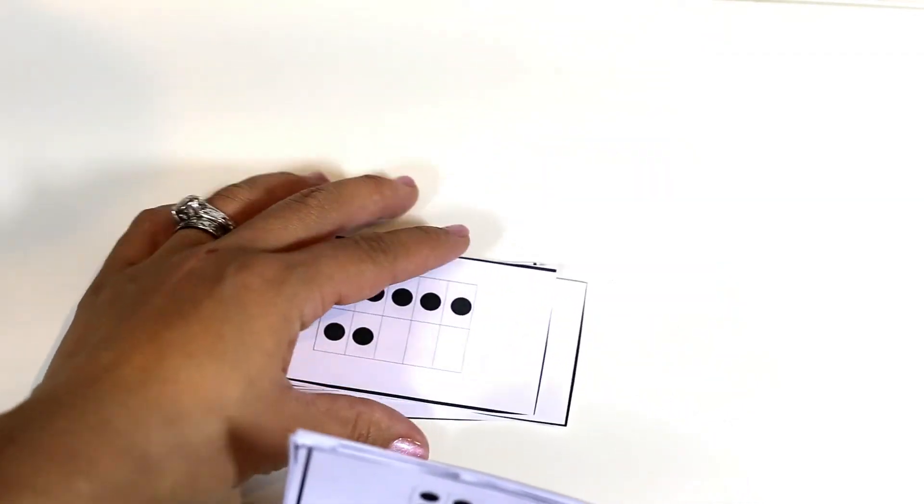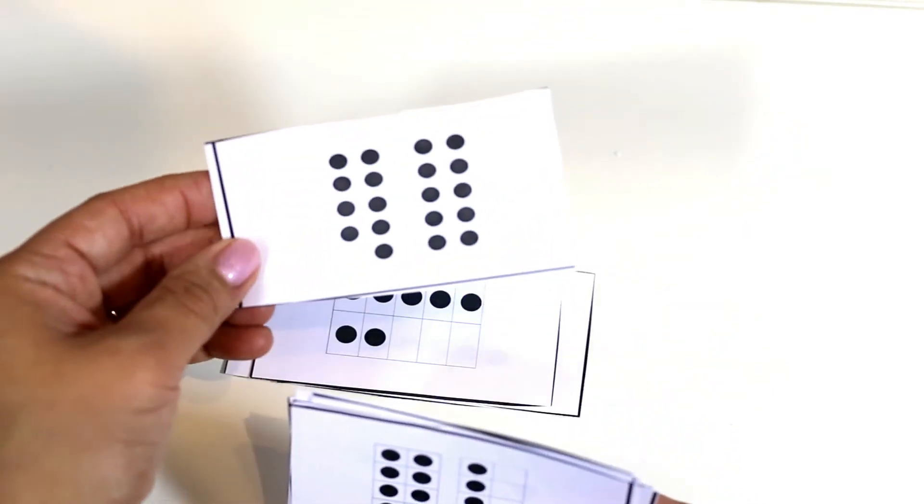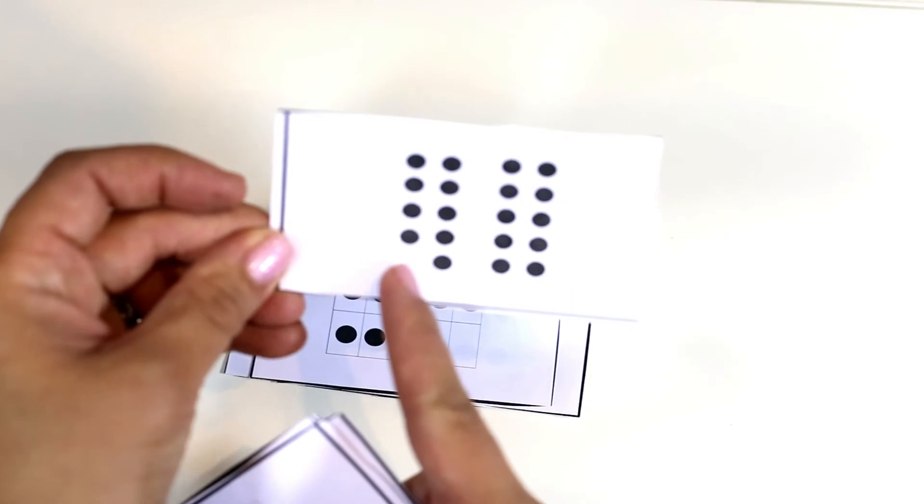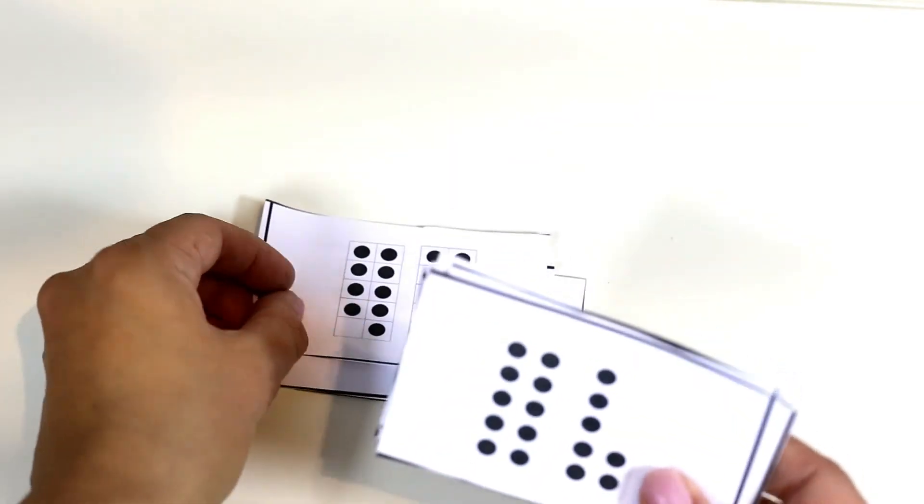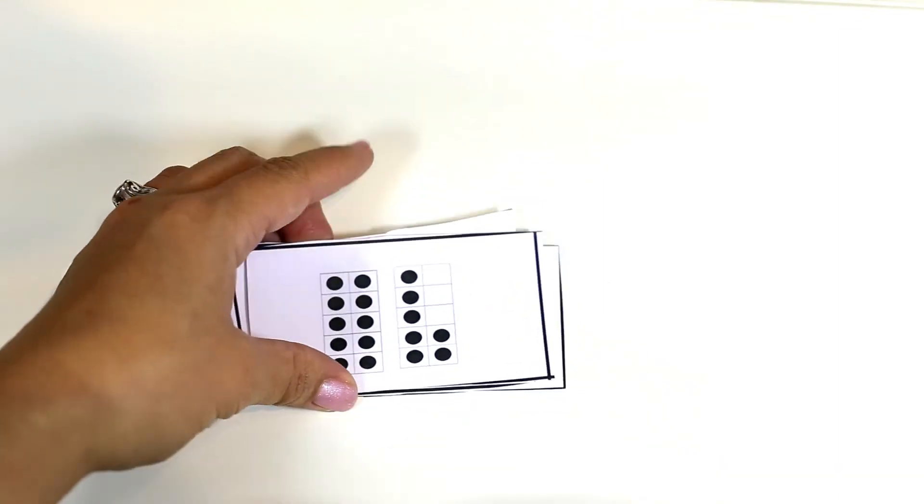I think you get the point on that one. So these cards go up to 20 and when there's 20 there's two sets of 10 frames and this one says since there's one missing at the very bottom that's 19, 17 and so on. So there you have it friends.